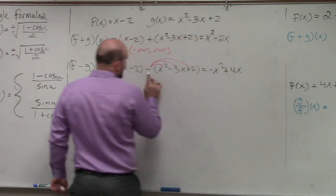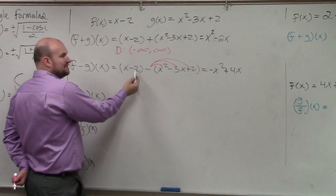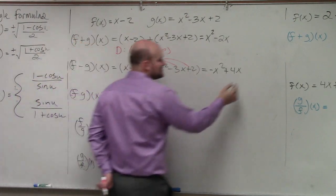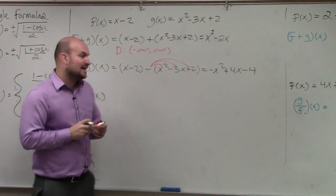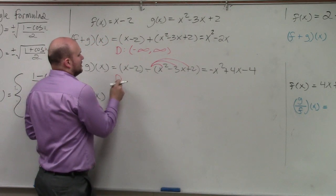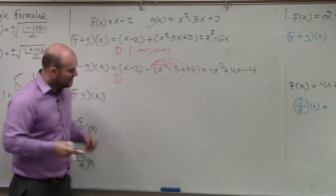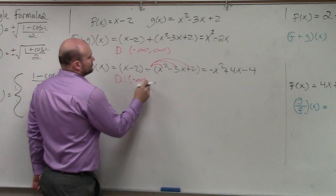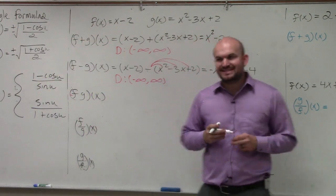And then here, I have negative 2 minus 2. So if you owe me $2 and you borrow two more dollars, you owe me $4. Again, let's go into our domain. Do I have any restrictions on my domain that we've discussed? No.